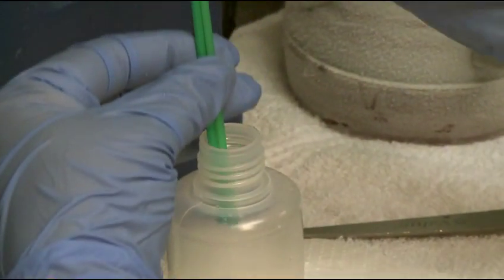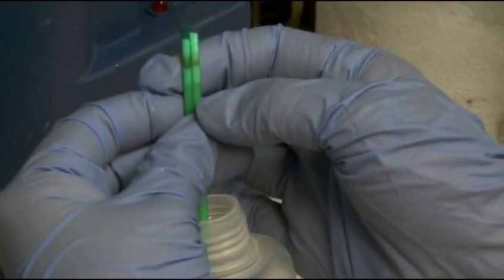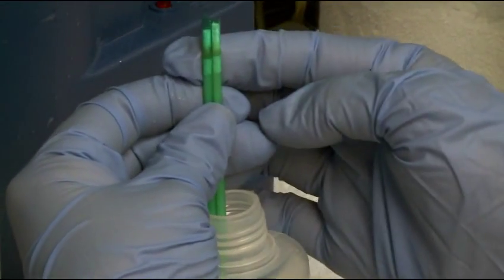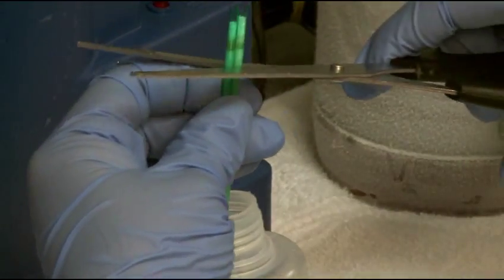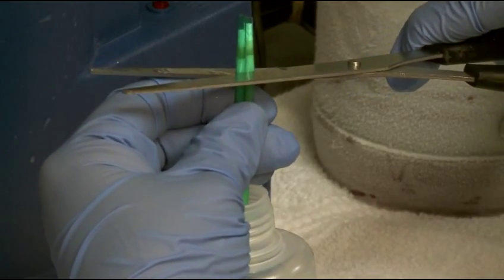Empty straws into the pre-warmed semen bottle at 26 degrees Celsius. Invert straws over the bottle and cut the cotton plug end to release the semen.